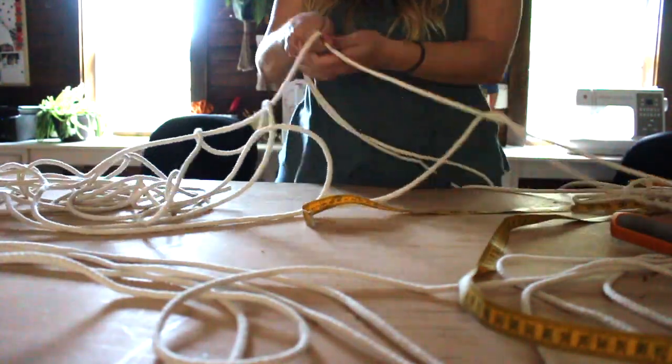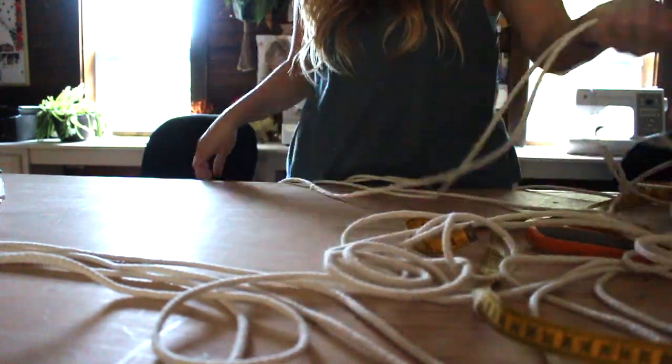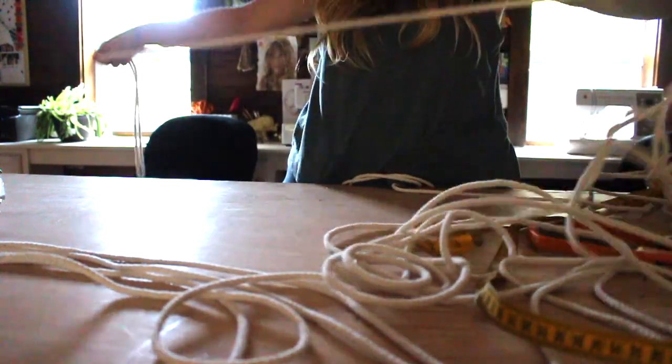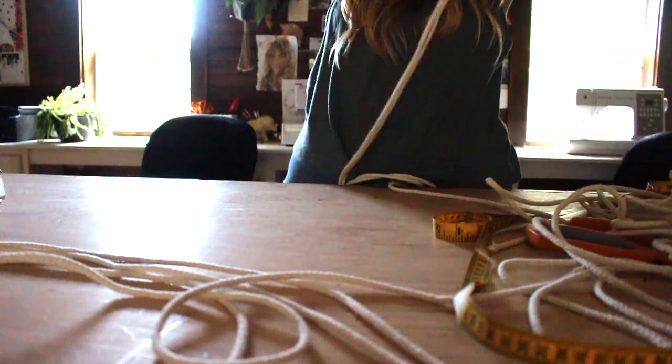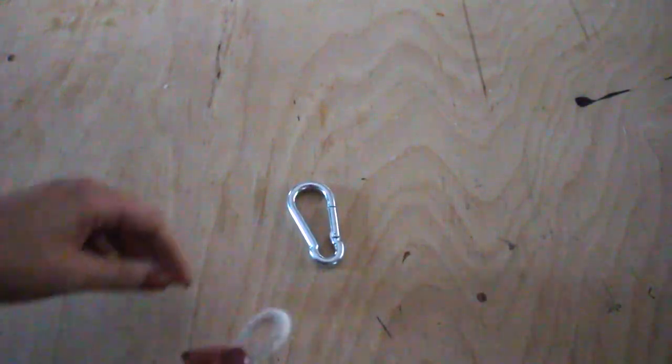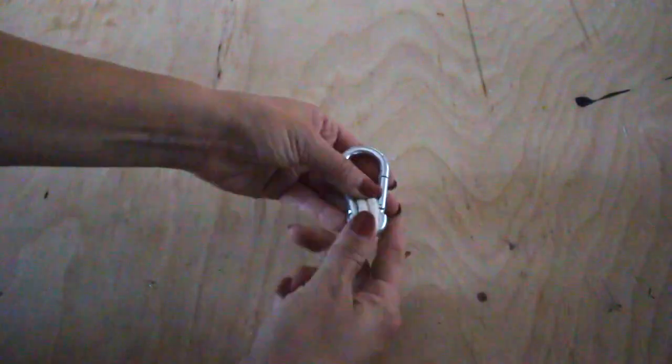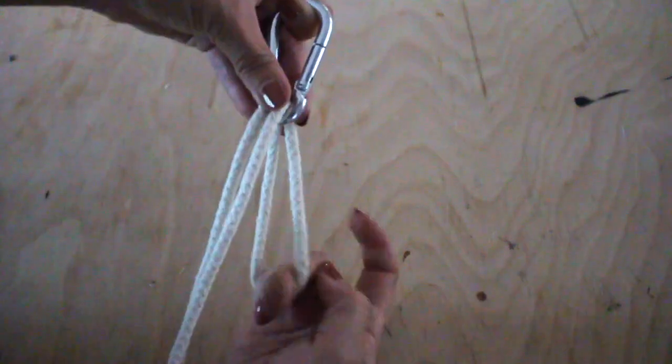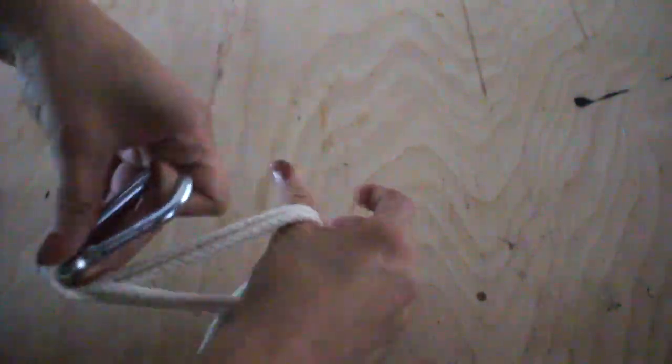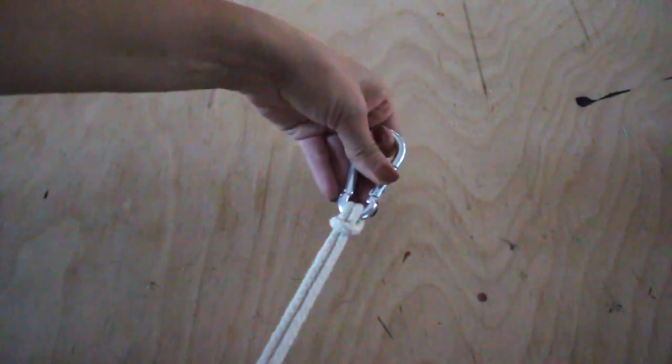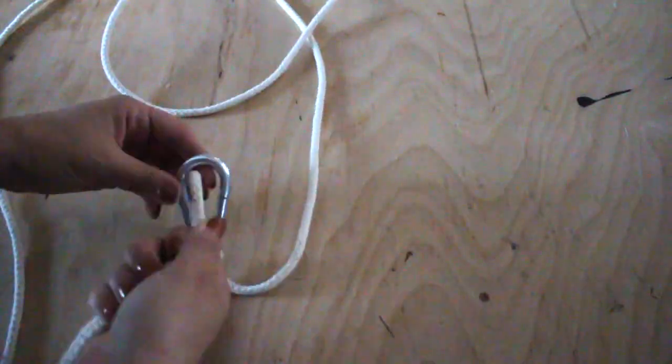Next we're going to take the carabiner that came in your hanging kit and attach the ropes to it. You should have 2 carabiners per swing. Fold the short piece of rope in half and then put the loop in the middle through the front of the carabiner. Then reach through the loop from the back of the rope and pull the front strings through the loop. Repeat this 3 times on each carabiner.